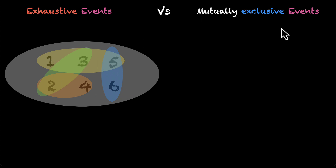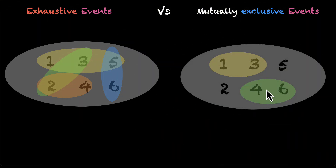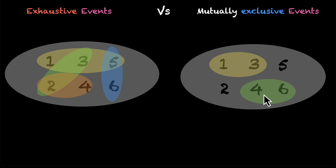Mutually exclusive events are fighting against each other — when one of them happens, the other one never happens. They don't have anything to do with the entire sample space. They're saying that if event {1,3} happens, the other event {4,6} can never happen. They're exclusive to each other: if one of them happens, it excludes the other one from happening, which means they are mutually exclusive events.